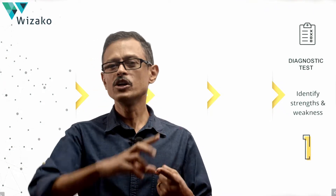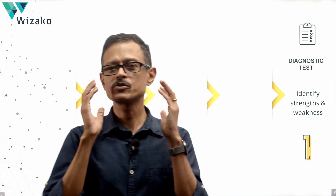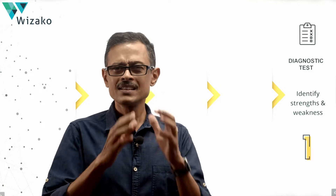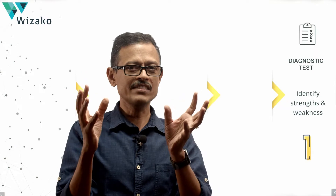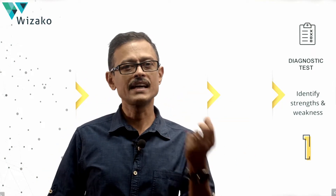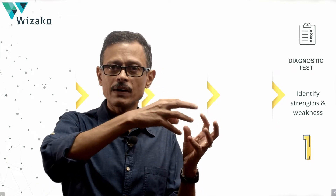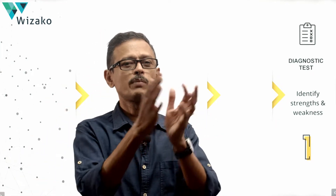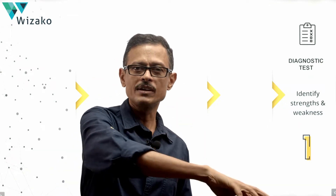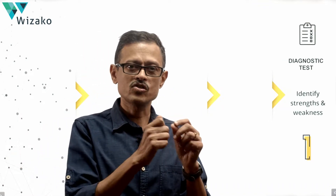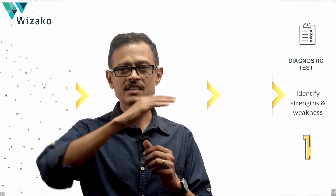The second thing the diagnostic test does is help you identify your strengths and weaknesses across three layers. At the broadest level — section level — you can say, I am stronger in math than in verbal, or vice versa. The second layer is concept-specific: I am strong in geometry but not in algebra, or I am strong in inequalities but not in rate problems. These are concept-related weaknesses at layer two.